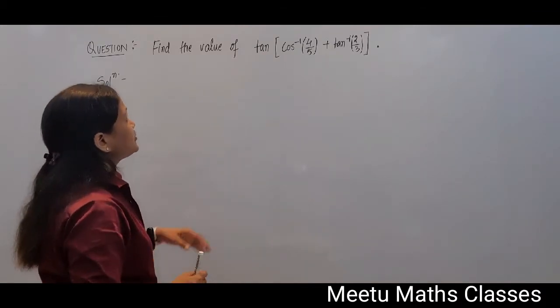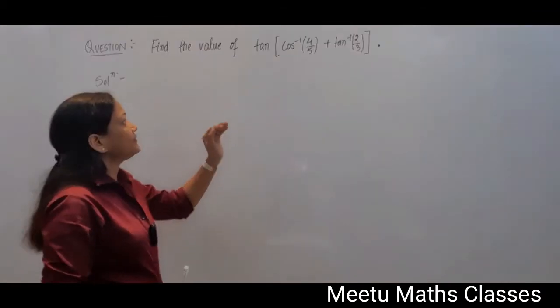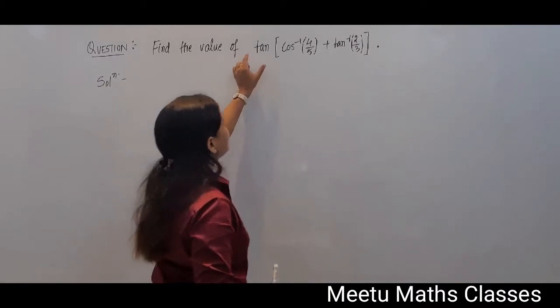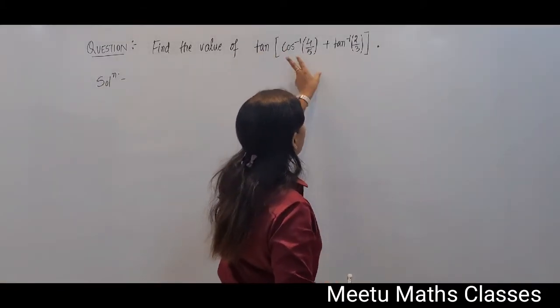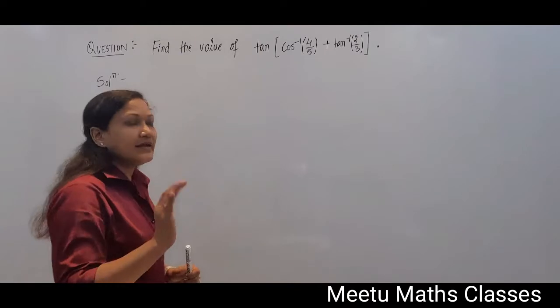Now to find the value of this function, first of all read your function. That is tan of something plus something and these two are some angles.